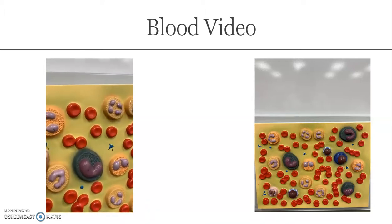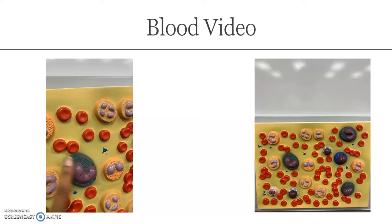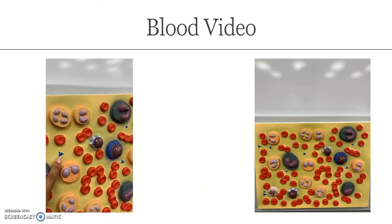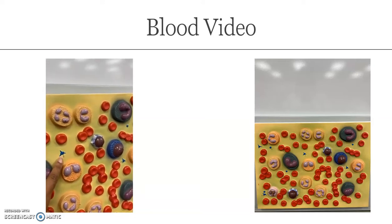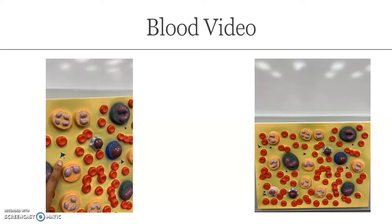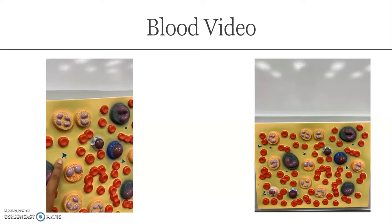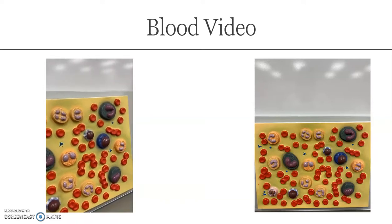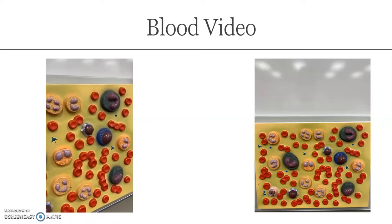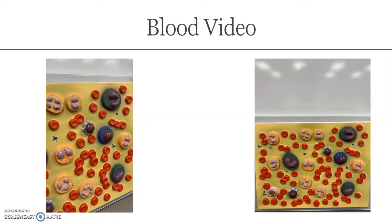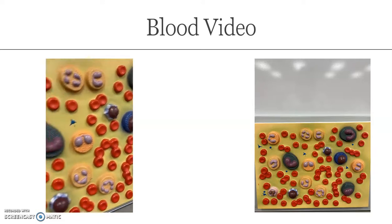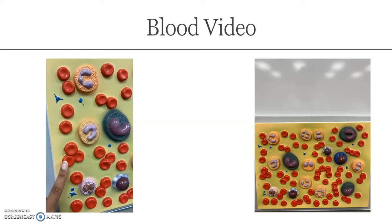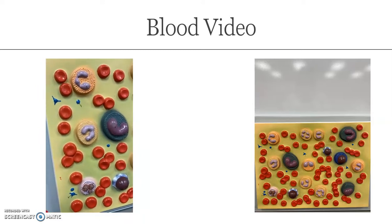Then we have our platelets. Platelets are also called thrombocytes, because they clot the blood. 'Thrombo' means clotting, 'cytes' means cells. So thrombocytes function is to clot your blood. The erythrocytes' function is to transport oxygen for you.